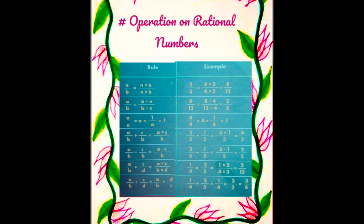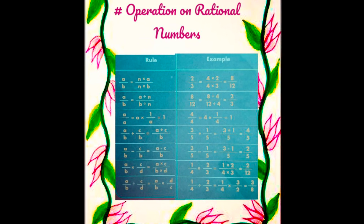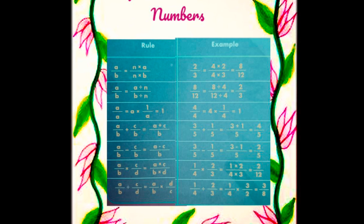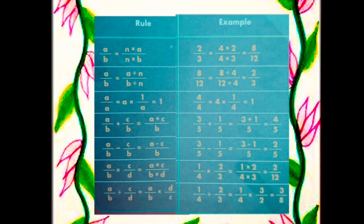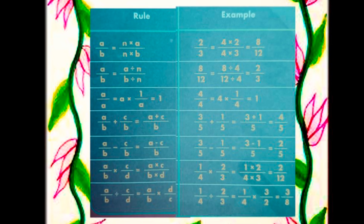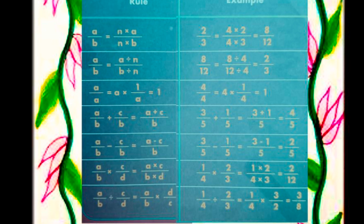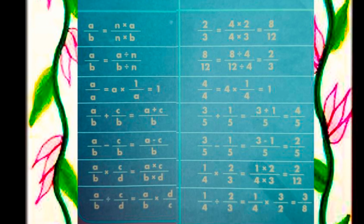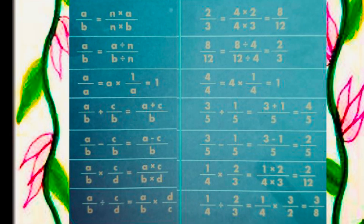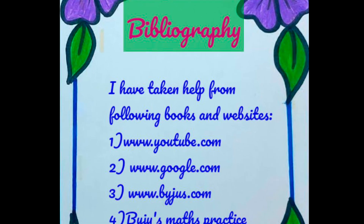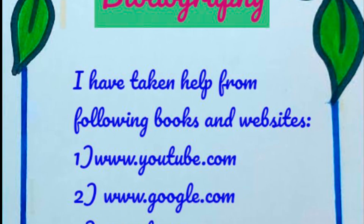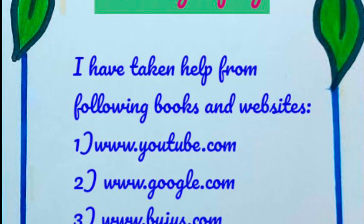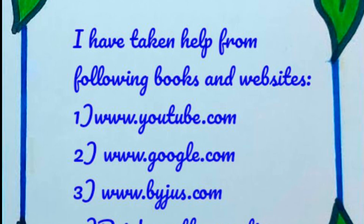The next and last topic is operations on rational numbers, with its rules and examples. The next and last page is the bibliography, which contains the references used for writing the project.